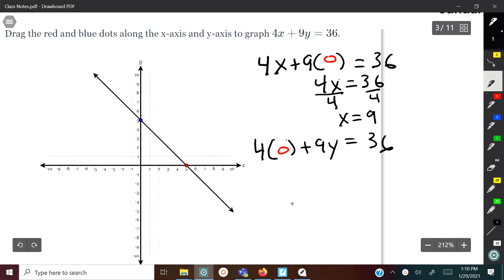So x is equal to nine. Our point is going to be nine, because x is nine, comma zero for y. That's one point, and you need two points to draw a line, so we got one and we'll get the other one. Four times zero is going to be zero and we'll bring down the 9y. We just solve for y now. When x is zero, y is four, so we got the other point zero, four.